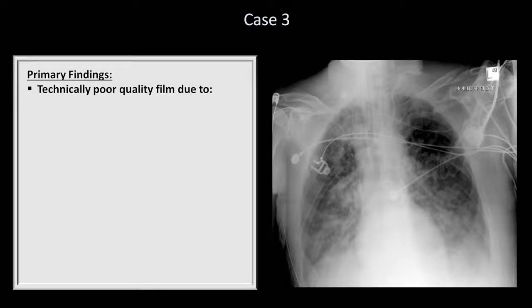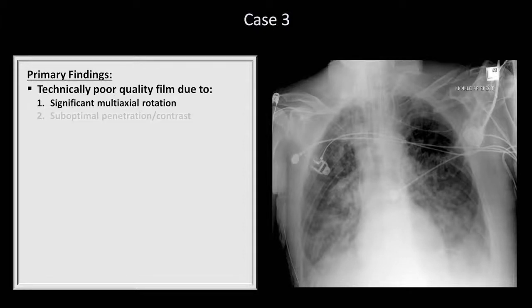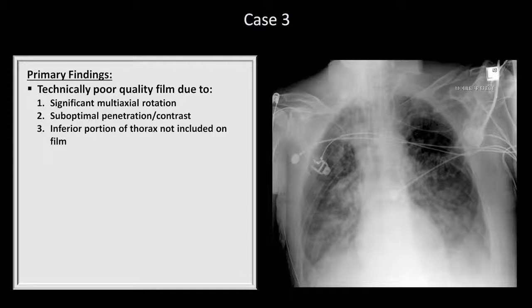He's rotated with his right side lower than his left, which is generally a non-issue. However, if you look at how the spinous processes in the cervical spine relate to the clavicular heads, you can see the spinous processes are much closer to the left clavicle, meaning the left shoulder is rotated forward relative to the right. This can impact assessment of the cardiac and mediastinal silhouette. In addition, the vertebral bodies are not visible behind the heart, which suggests suboptimal penetration or level of contrast. The final observation regarding technical quality is that the inferior portion of the thorax is cut off the bottom of the film altogether, limiting evaluation of the diaphragm.